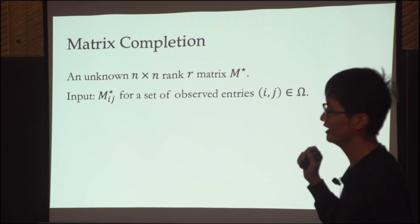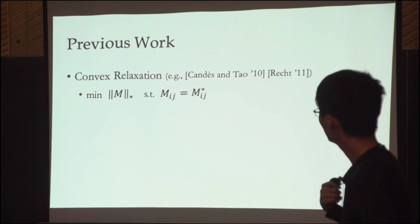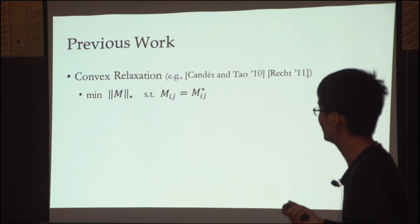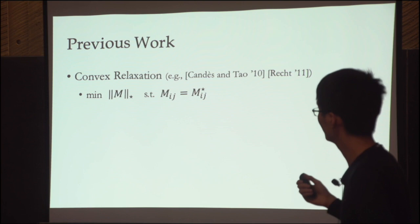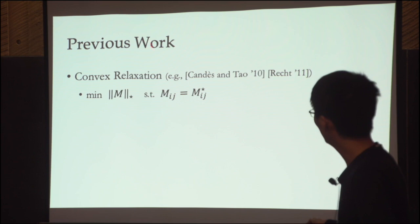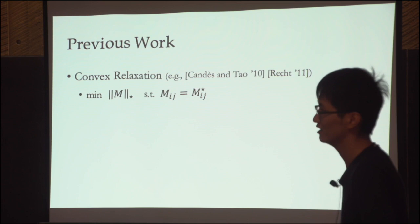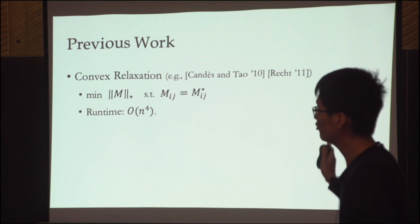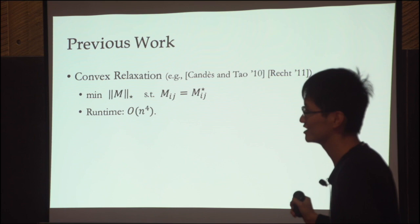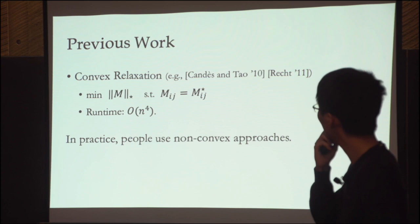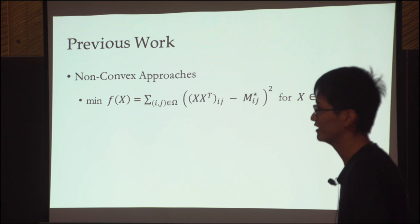Here's the notation. I have an n×n rank-r matrix M*, a set of observed entries Ω, and the goal is to recover M*. There are two main approaches. The first is convex relaxation: minimize the nuclear norm of M (the sum of singular values) subject to agreement with all observations — this is a relaxation of minimizing the rank. For this talk, we focus on non-convex approaches since the convex approach is too slow in practice; everyone runs non-convex gradient descent in practice.